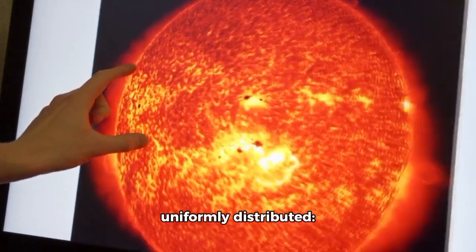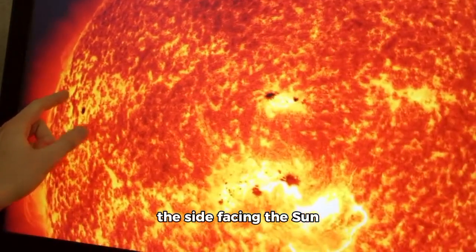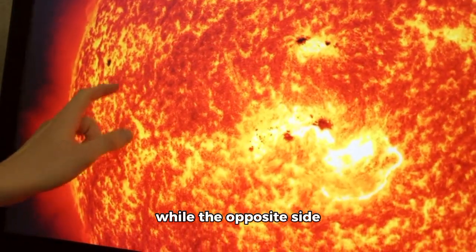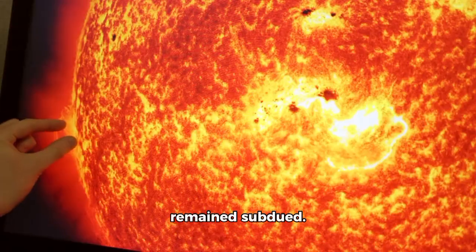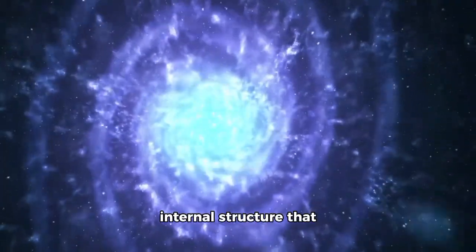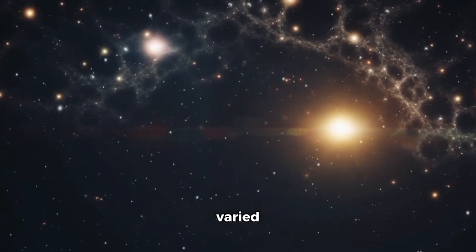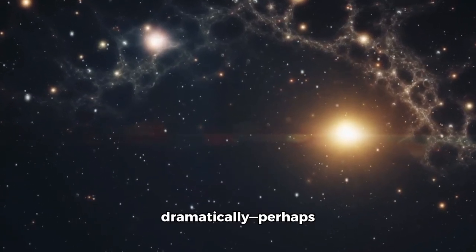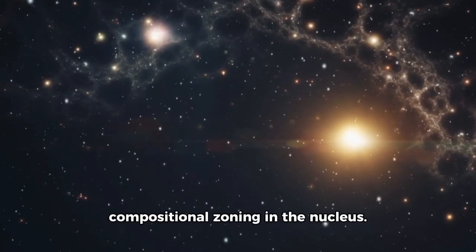Gas and dust weren't uniformly distributed. The side facing the sun showed bright plumes, while the opposite side remained subdued. These irregularities weren't just aesthetic quirks. They hinted at an internal structure that varied dramatically, perhaps surface vents or deep compositional zoning in the nucleus.